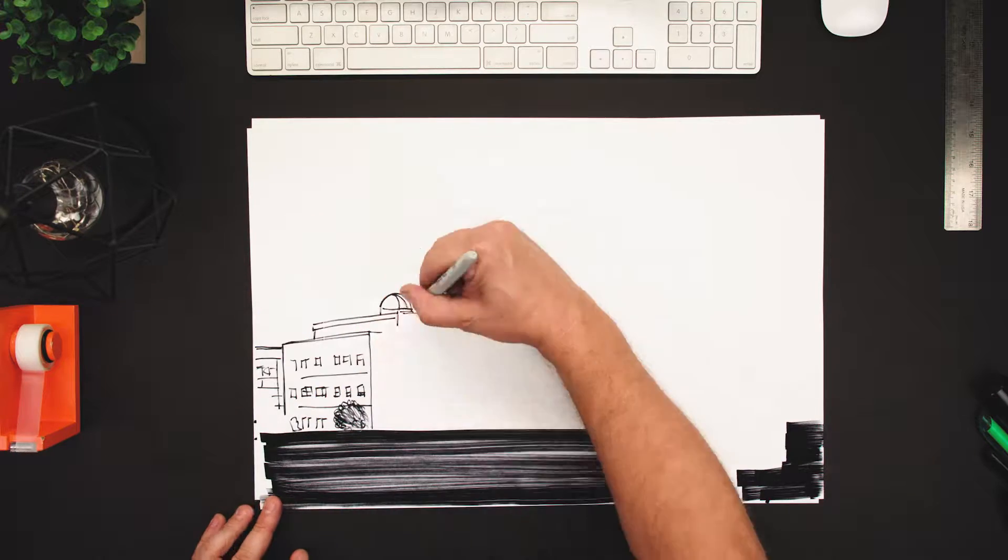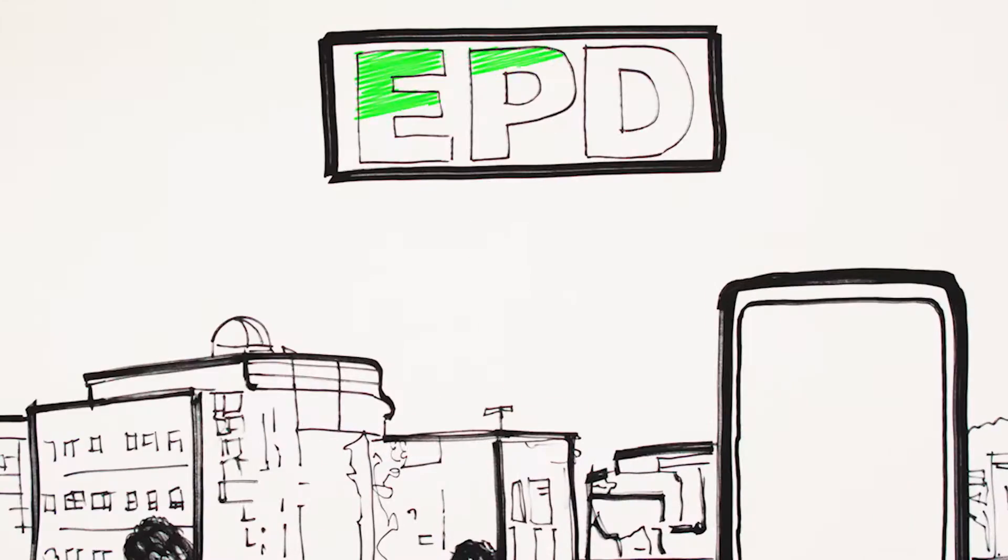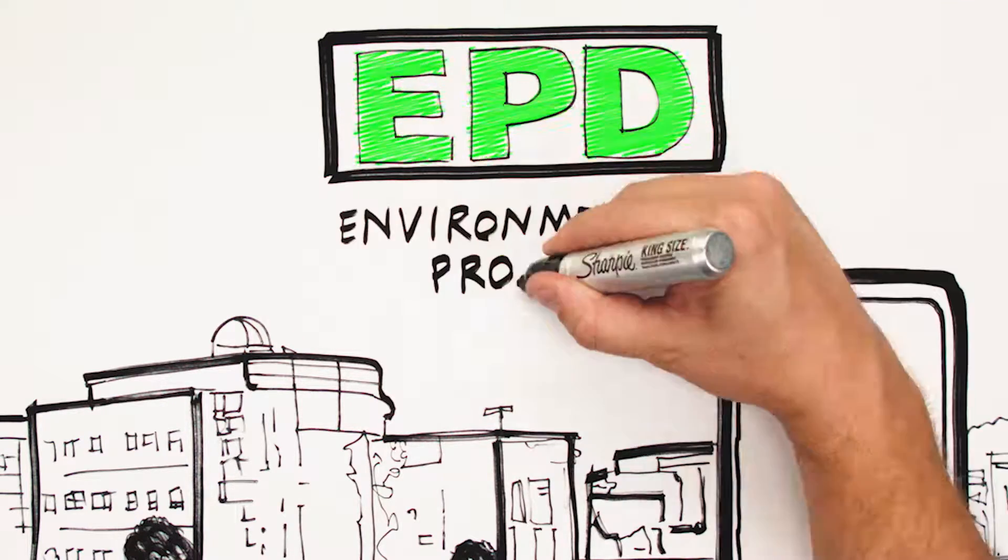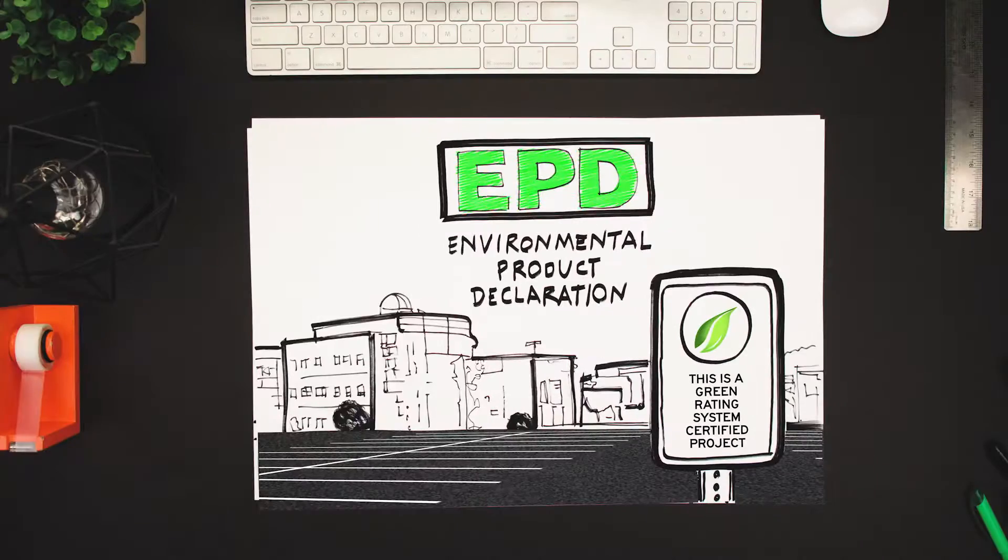In order to earn credits under these systems, contractors and material suppliers must provide information on the potential environmental impacts of their products in what's called an EPD. EPD stands for Environmental Product Declaration. It's a standardized way to communicate the environmental performance and impacts of a product or system.